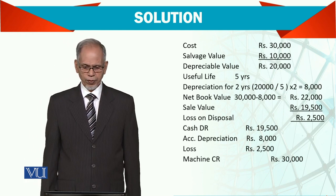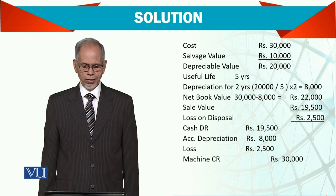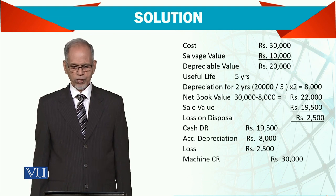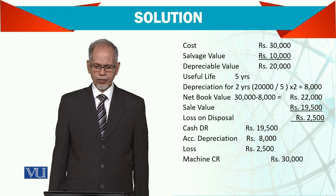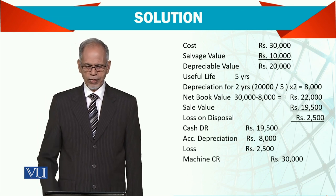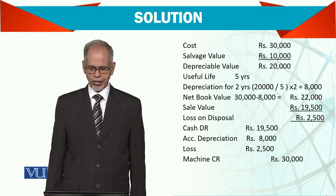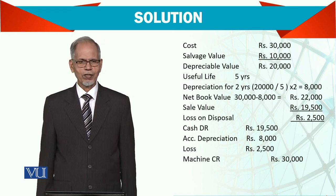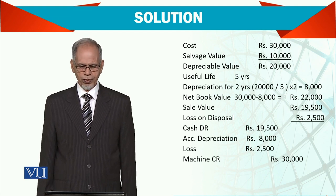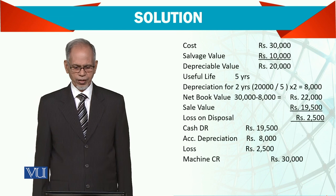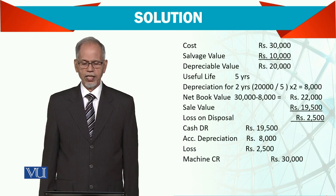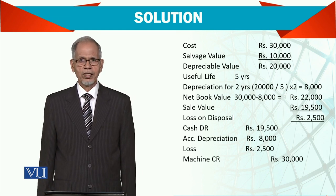First, cost is 30,000. Salvage value is 10,000. So depreciable value is 20,000. Useful life is 5 years, so 2 years depreciation comes to 4,000 per year — 8,000 total. Net book value is 30,000 minus 8,000 = 22,000. And you are selling for 19,500. So in this case, you are sustaining a loss. The entry will be: debit cash, debit accumulated depreciation for 2 years, and debit loss of 2,500, then credit the machine by 30,000.